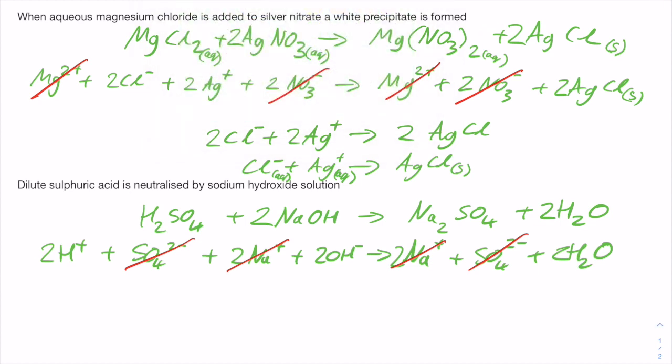Now we'll put 2H+ plus 2OH- makes 2H2O, and we can simplify it down like in the previous question where we'll have H+ plus OH- making H2O.